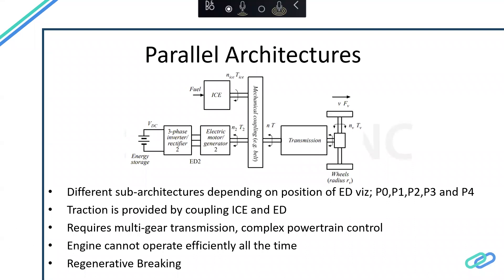One limitation is that when the engine is connected it has to operate depending on wheel speed, so it cannot operate at one single most efficient point, but it can operate in a generally efficient area. One advantage is that since engine and electric drive combine to provide traction efforts, each only needs to provide half the required torque. However, this architecture requires a multi-gear transmission and complex powertrain control to convert engine speed to wheel speed, which is almost always different from what the engine is running at.